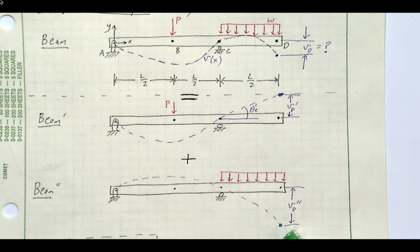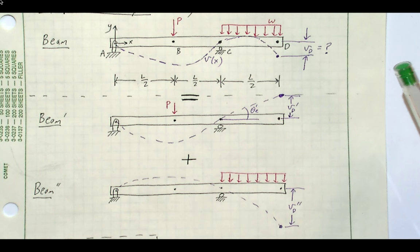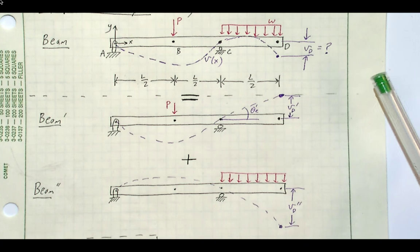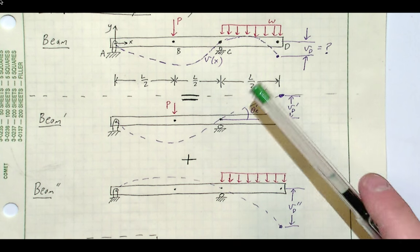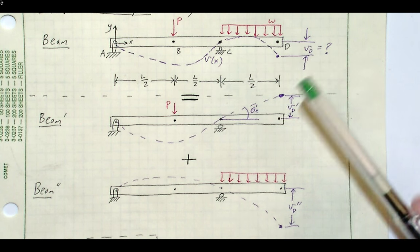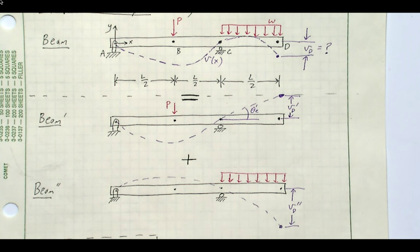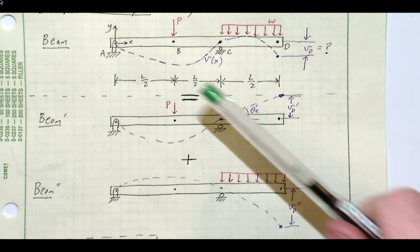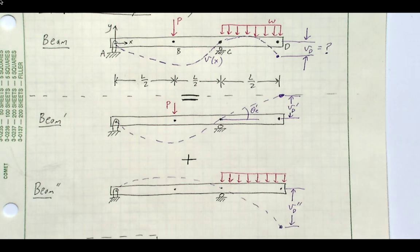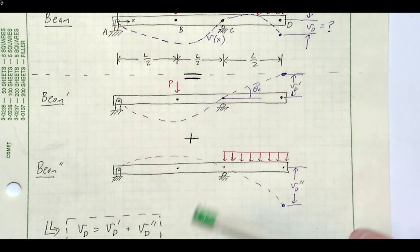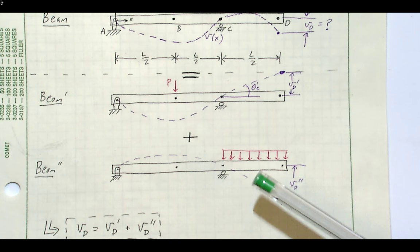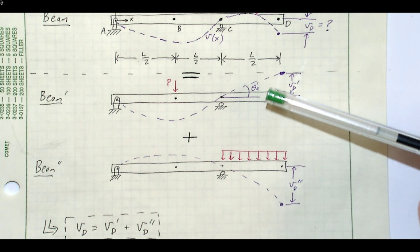For beam double prime there will be no deflections at either support and quite a drastic downward deflection due to the uniformly distributed loading. Note that no relationship between P and W is given, so the total amounts of deflection are somewhat indeterminate until we know their relative strengths. The superposition principle gives us: the total deflection at D, vD, equals the deflection at D for beam prime plus the deflection at D for beam double prime.